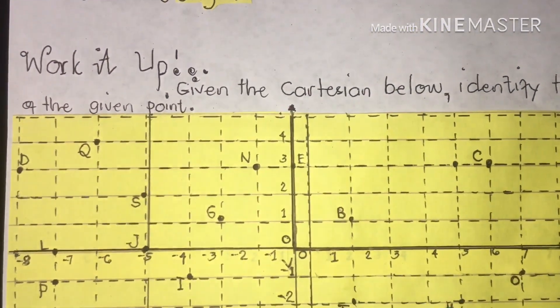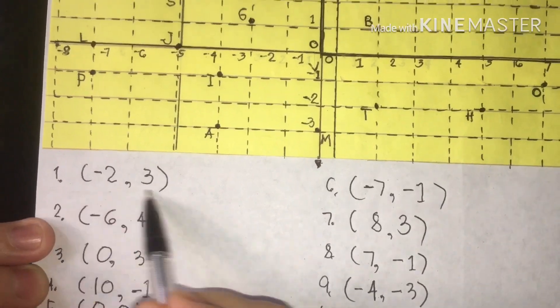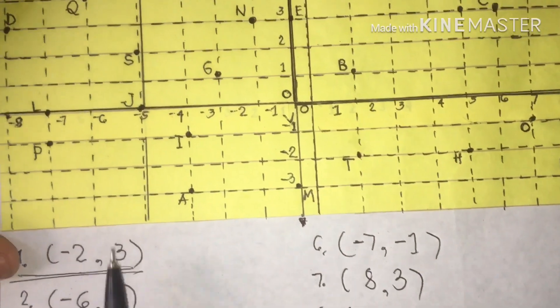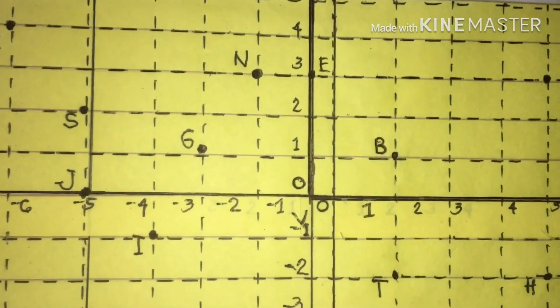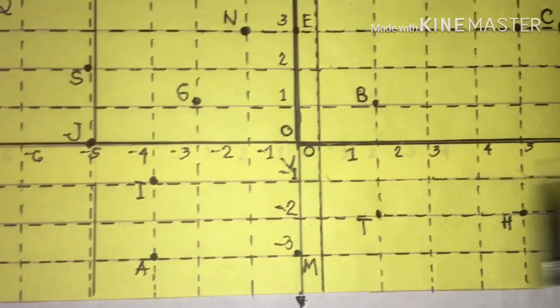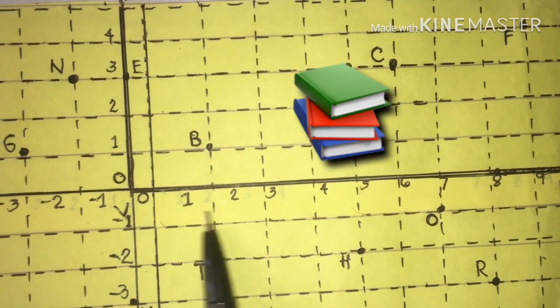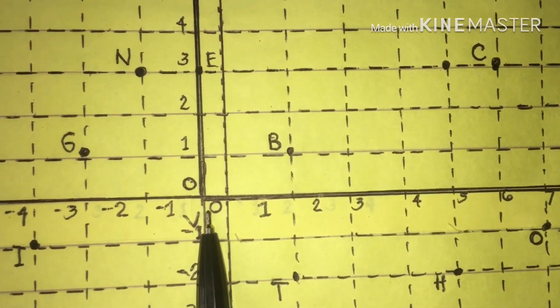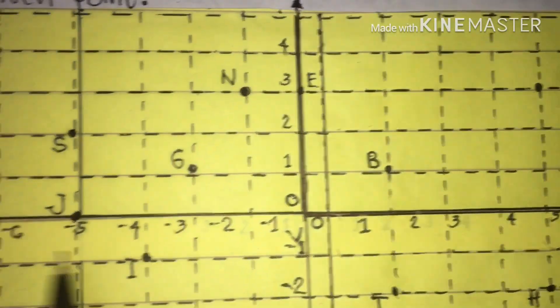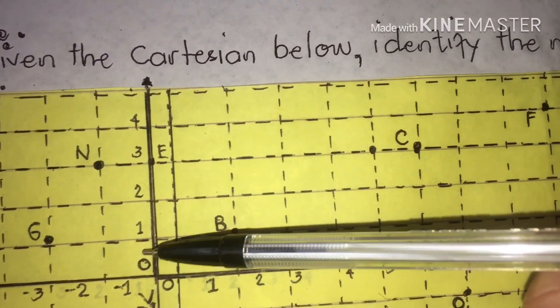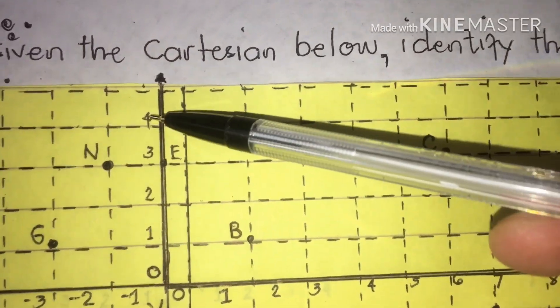We have our first given point: number one is negative two and positive three. In our coordinate system, we are going to locate negative two and positive three. On the right side from the origin zero, one, two, three — up to ten is positive. From the left side, zero, negative one, until negative eight is the negative side. From zero going up, one to four is positive.